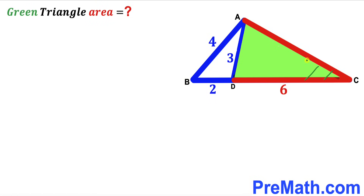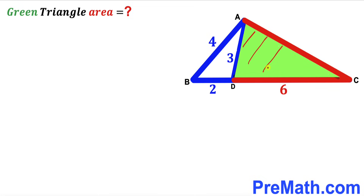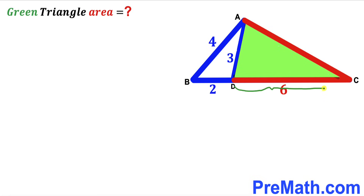In this video we have this big triangle ABC that consists of two triangles: the blue triangle ABD and the green shaded triangle ACD. In this blue triangle its side lengths are 2, 3, and 4 units respectively, and the side CD length is 6 units. Our task is to calculate the area of this green shaded triangle.